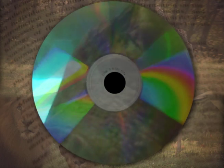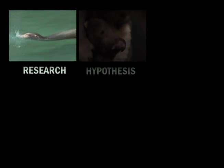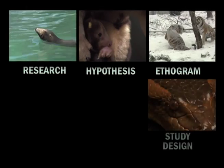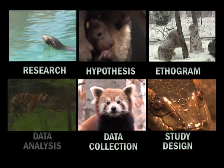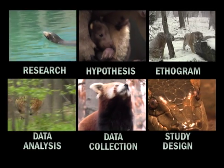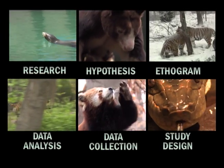This DVD is a practical guide to animal behavior research. It will train you to answer real questions about animal behavior using the common language of science, a language that allows other researchers to understand and build upon your work. This DVD is divided into six chapters, each covering one or more of the essential steps in the scientific approach to animal behavior.